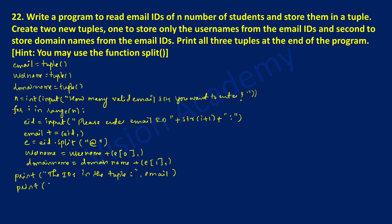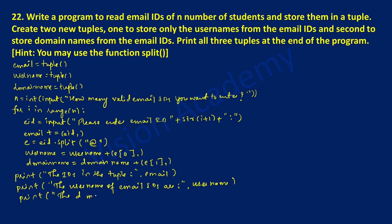Once again, I am going to use the print statement to print the usernames. In double quotation marks, I am going to write 'the username of email ids are', put comma, then use the username variable and close the bracket. Once again, I am going to write a print statement to print the domain name. In double quotation marks, 'the domain name of email ids are', put comma, then write the variable called domain name and close the bracket.